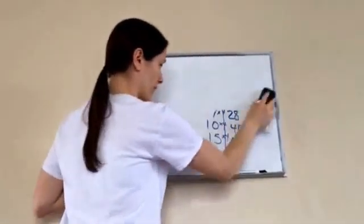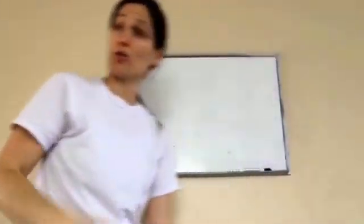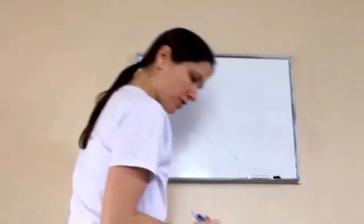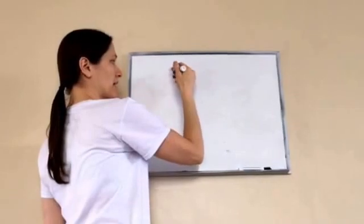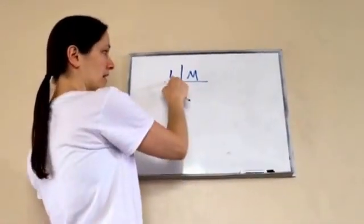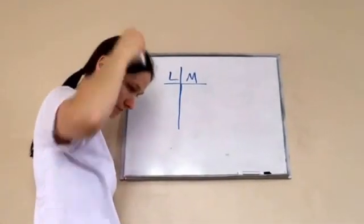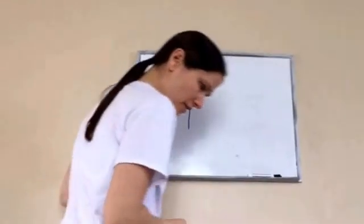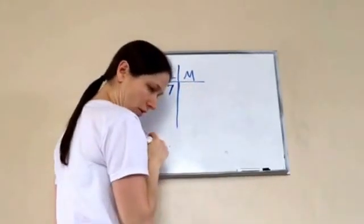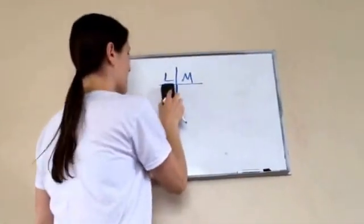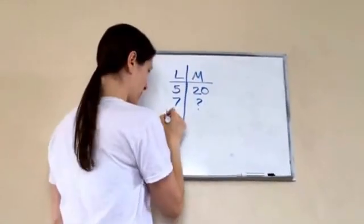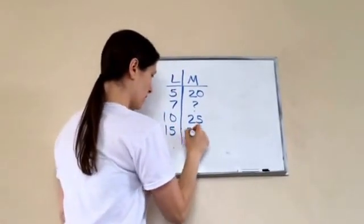Now let's try another one. This time we're just going to use the function method. They're doing another square and for whatever reason they're using the letters L and M. It really doesn't matter — L is the sides and M is the perimeter. Let's find the value of M if L is 7. Let me write these on here: 5, 20, 7 blank, 10, 25, 15, and 30.